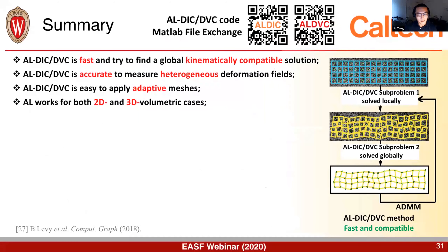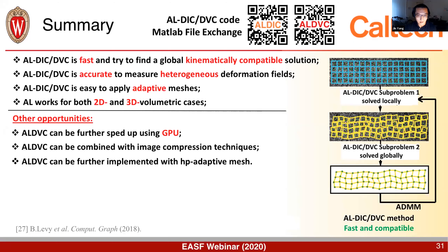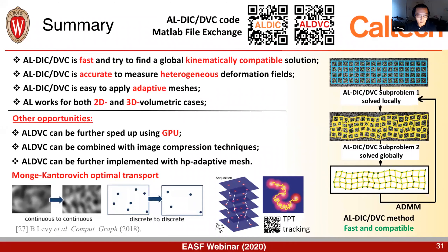In summary, ALDIC and DVC are fast methods that solve globally kinematically compatible solutions. They are very accurate for measuring heterogeneous deformation fields, can be applied with adaptive mesh, and can solve both 2D and 3D volumetric deformations. Future work includes GPU acceleration, combining with image processing techniques, applying HP adaptive mesh, and extending to discrete cases via the Monge-Kantorovich optimal transport framework to improve accuracy and robustness for particle tracking algorithms. Our code is available on the MATLAB File Exchange.